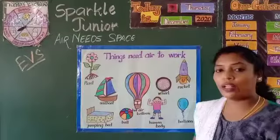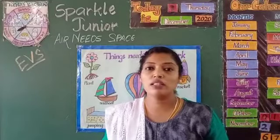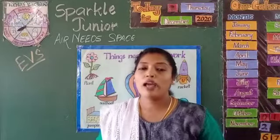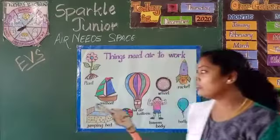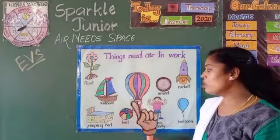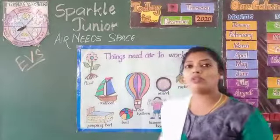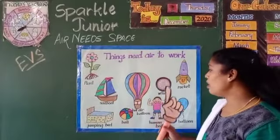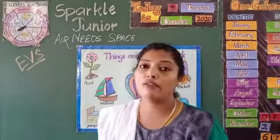Next, wheel. How you see your papa and mama when they take their vehicle — they check the air in the wheel, whether the wheel is filled with air or not. If not, they go to the petrol pump and pump the air in the wheel. So, these are the things that need air to work: human body, sailboat, hot air balloon — look at the hot air balloon, if there is air only then it can work — jumping bed, ball, wheel, rocket, and balloon.